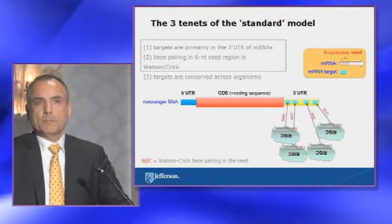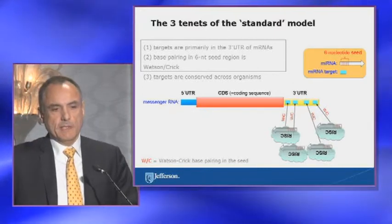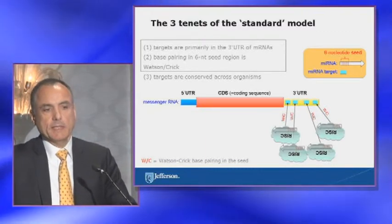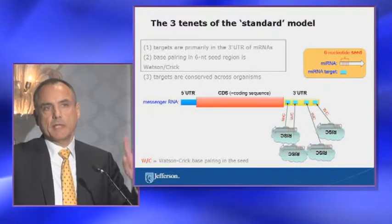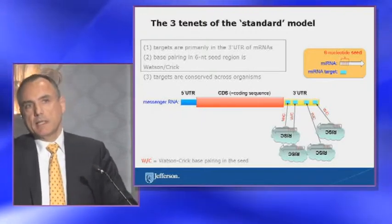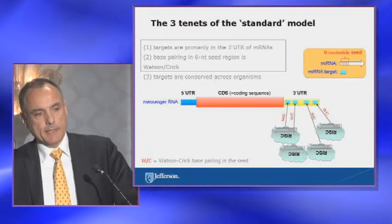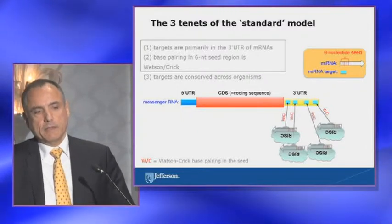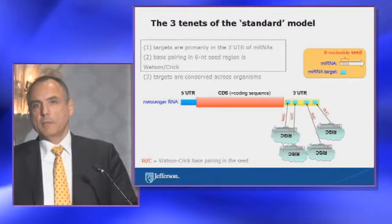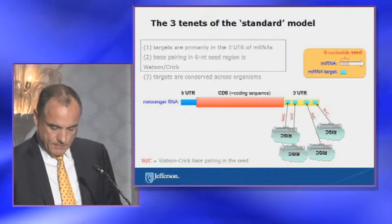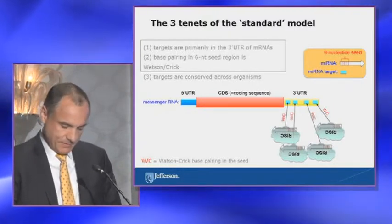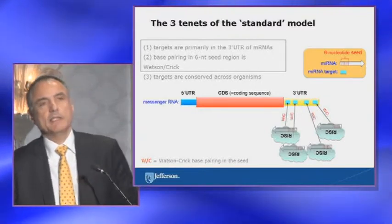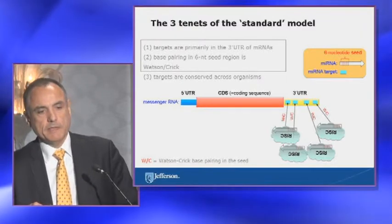The standard model has basically three tenets, and it has been in existence for over 10 years. First, microRNA targets are primarily in the 3' untranslated region of messenger RNAs. Second, base pairing is governed by a six-nucleotide region near the beginning of the microRNA that forms Watson-Crick base pairs with the target. And third, targets of microRNAs are typically conserved across organisms. The model says all the action happens in the 3'UTR, with Watson-Crick pairs between the seed region and the target.